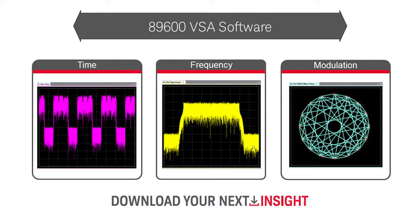Let's get started by downloading and exploring the 89600 VSA software, one of Keysight's most popular software packages, which is excellent for signal demodulation and vector signal analysis.